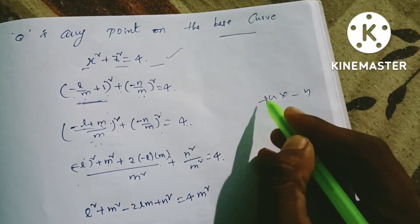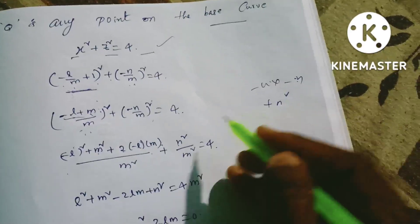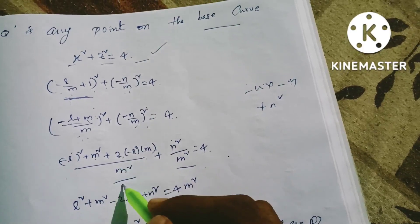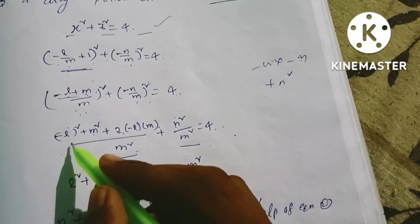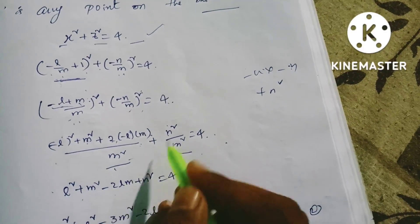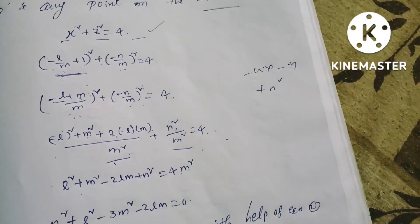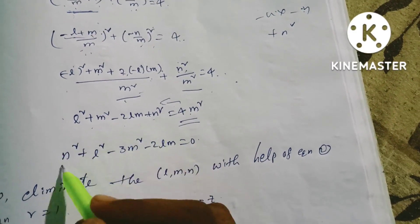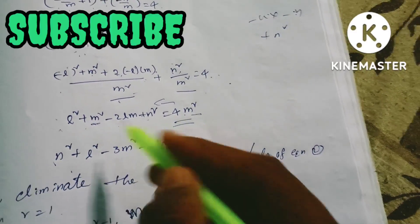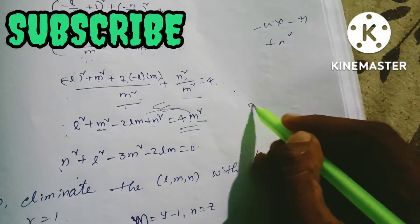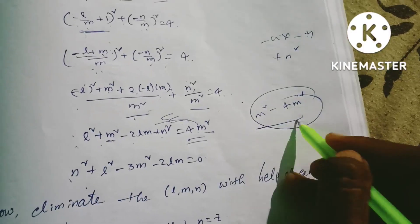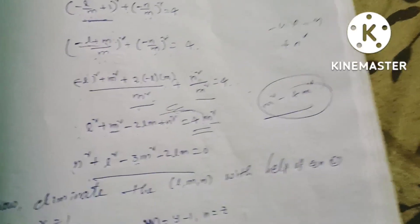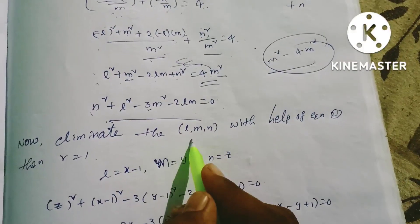Expanding: (L² + N²) / M² and the full expansion gives L² - 2LM + M² + N² = 4M². Rearranging: L² + N² + M² - 4M² - 2LM = 0, which simplifies to L² + N² - 3M² - 2LM = 0. Now eliminate the L, M, N values.